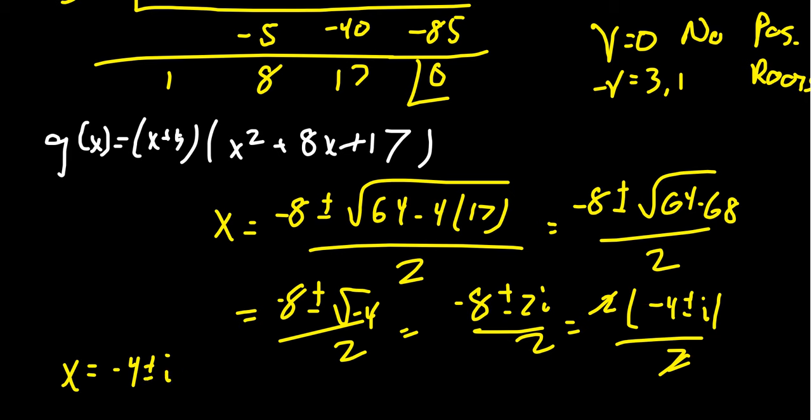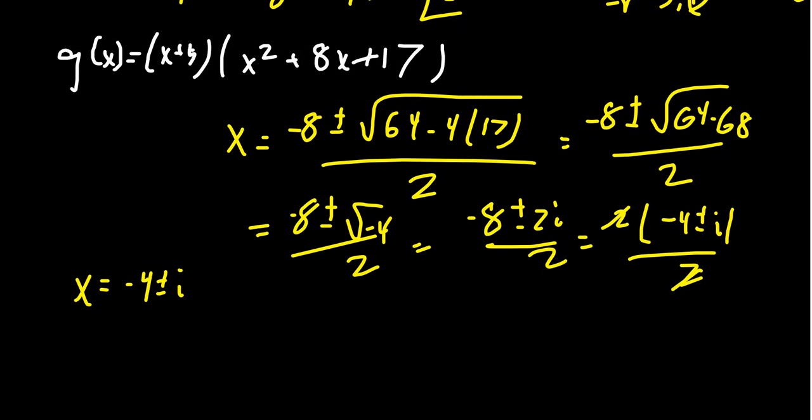And so we see that the non-real roots here are actually going to be negative 4 plus or minus i. That actually shows up with what Descartes' rule says. Descartes' rule said we'll either have three negative roots or one negative root. We actually only had one because two of them turned out to be non-real.